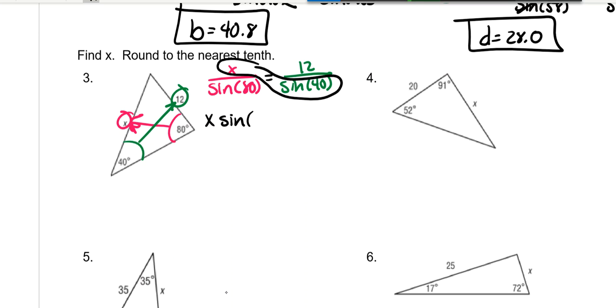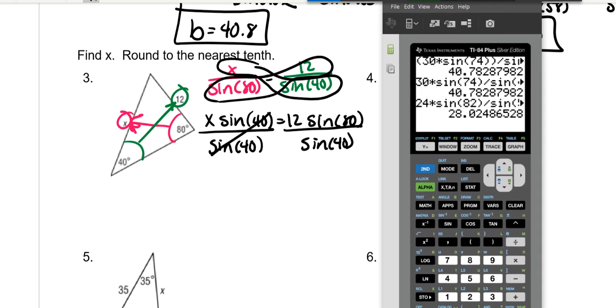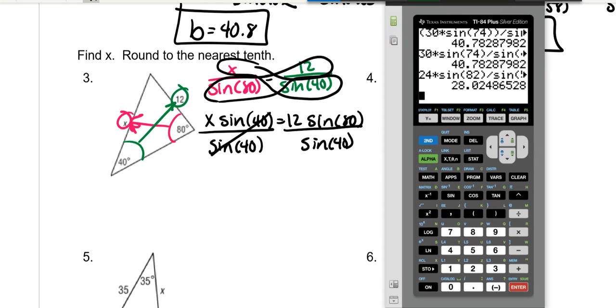So X times the sine of 40 is equal to 12 times the sine of 80. You need to get X by itself. So divide both sides by the sine of 40. And then you just enter all that into your calculator. So we have 12 times the sine of 80 divided by the sine of 40. 18.38, which is 18.4.